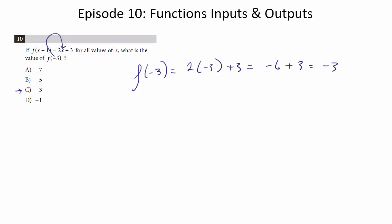So what's wrong with that method? That would be totally fine as an approach if f of x were defined as 2x plus 3. But as you can see in the question, f of x minus 1 is defined as 2x plus 3. If this were the definition,